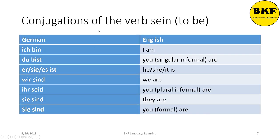Now, conjugations of the verb 'to be.' If I am going to say 'I am,' I am going to say ich bin. 'You are' is du bist. 'He is' is er, 'she is' is sie, 'it is' is es — and the verb form is ist. 'We are' is wir sind. 'You are' for plural and formal will be ihr seid. 'They are' will be sie sind. And 'you are' formal would be Sie sind.